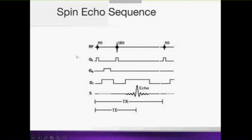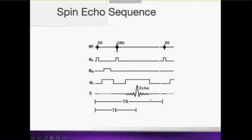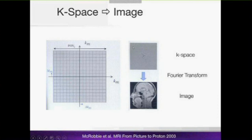To summarize: to get an echo and localize it, we need the RF pulses — in spin echo, a 90-degree pulse followed by a 180-degree pulse — and we need the slice-encoding gradient, the phase-encoding gradient, and the frequency-encoding gradient, all applied in the correct order. That is why it is called a sequence. Each repetition fills one line of k-space, and we repeat the whole process again and again until k-space is completely filled.